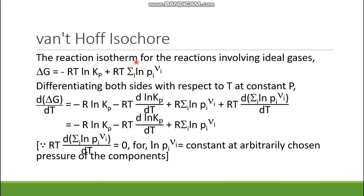Taking the summation part as constant and differentiating T gives R Σᵢ ln Pᵢ^νᵢ. Then with R constant and T constant, the differentiation gives d/dT of Σᵢ ln Pᵢ^νᵢ. Now this part is zero — if the pressures of the individual components are arbitrarily chosen, these pressures are constant, so their logarithms are also constants, and hence the differentiation is zero. So this part vanishes, and the remaining three parts are: -R ln Kp - RT d/dT ln Kp + R Σᵢ ln Pᵢ^νᵢ.